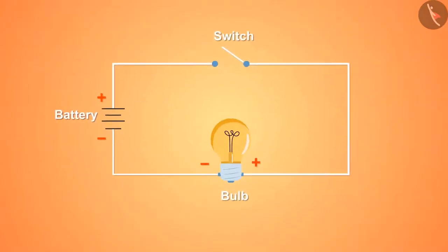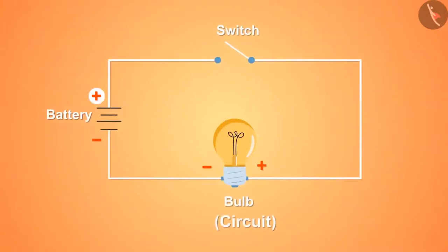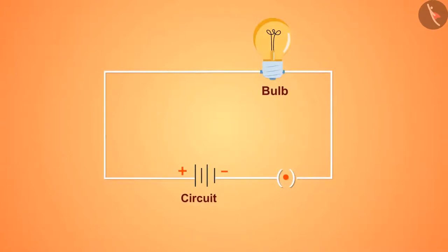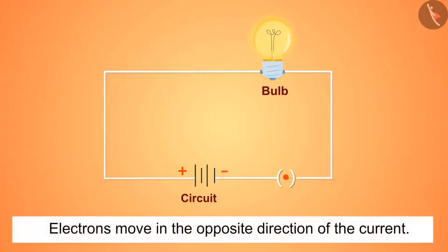This diagram shows a circuit in which the positive terminal of the battery is connected to the positive terminal of the bulb via wires through a switch, and the negative terminal of the battery is connected to the negative terminal of the bulb. These positive and negative signs indicate the direction of current in the circuit. The electric current starts flowing from the positive terminal of the battery and ends at the negative terminal. It is also to be noted that electrons move in the opposite direction of the current.